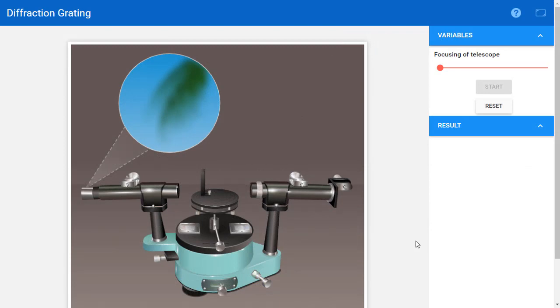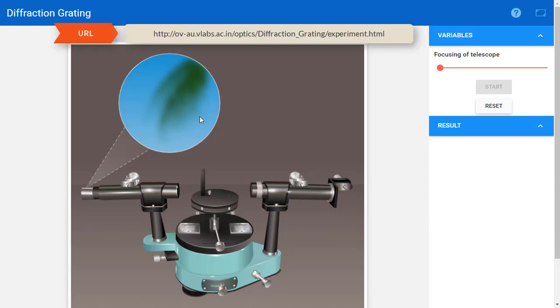This is a virtual lab setup that can be accessed on the web. The circular area shows what we would see looking into the telescope in an actual setting. We adjust the focus to get a sharp image of the object which is, in this case, a leaf.